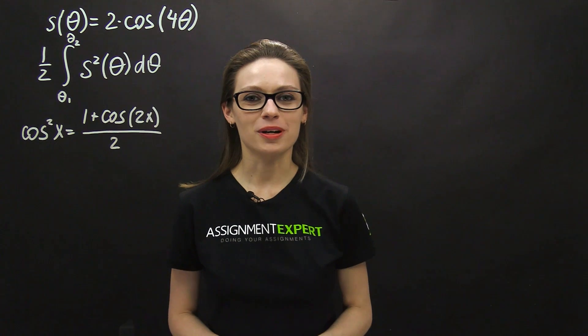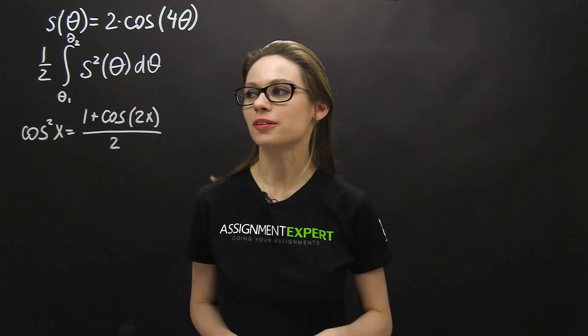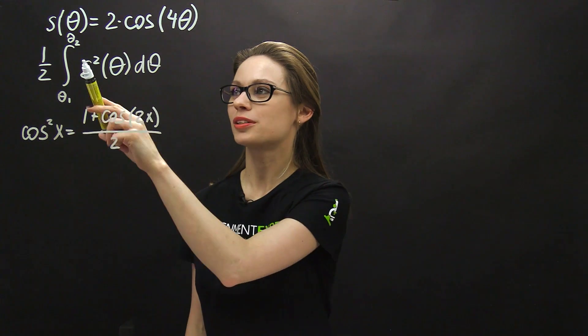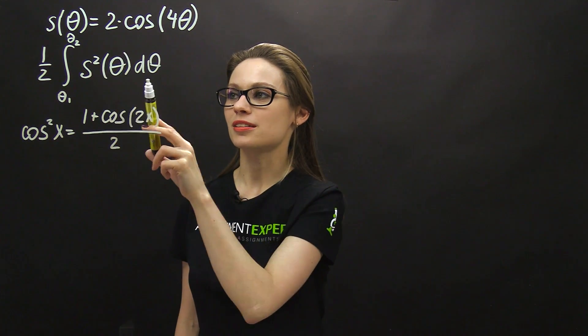The area bounded by the curve is found by the following formula: 1 half times the integral from theta1 to theta2 of the squared function.